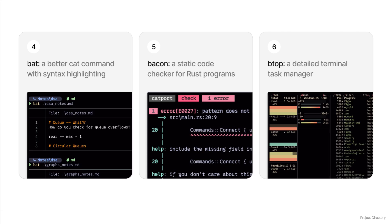Bat is a cat clone with syntax highlighting and Git integration. When I use Bat to view a file, it automatically detects the language and highlights the syntax, making it easier to read code. Bacon is a background Rust code checker — it watches my files for changes and runs cargo check in the background so that I get instant feedback on my code without having to manually run the command. It's a great tool for catching errors early. Btop is my terminal-based task manager that is faster, battery efficient, and often more clear and informative than the actual Windows task manager for certain things.